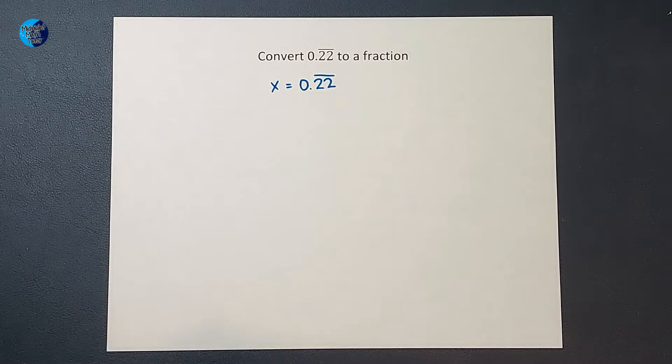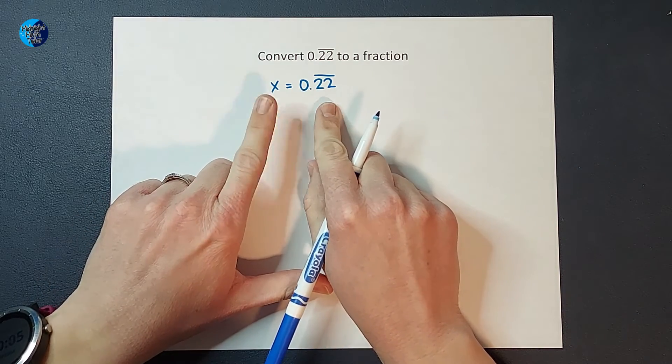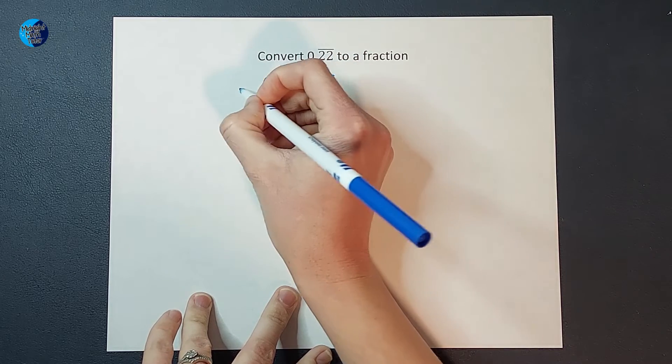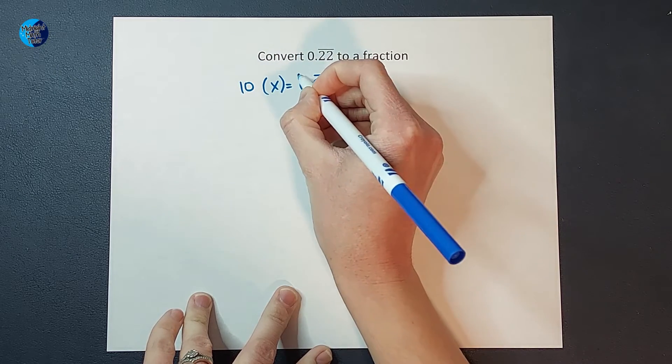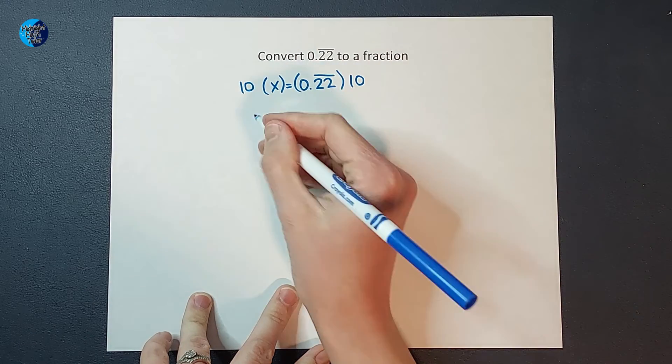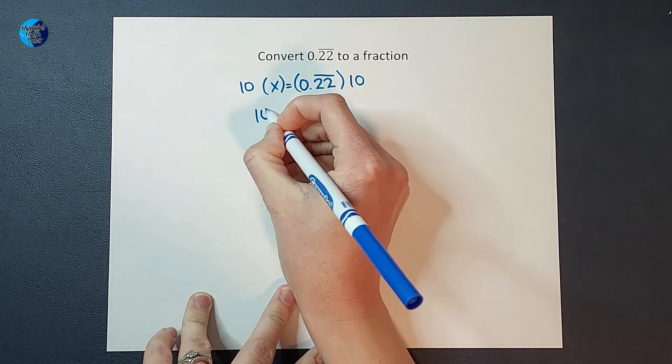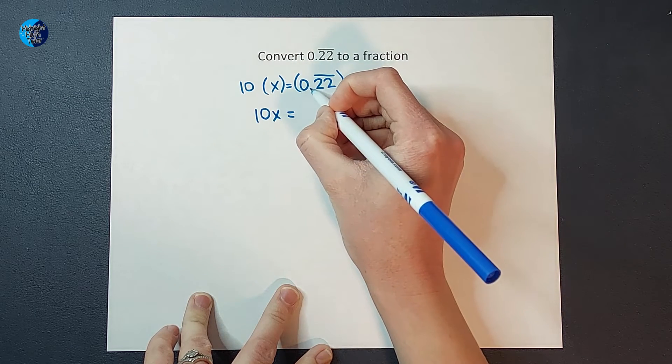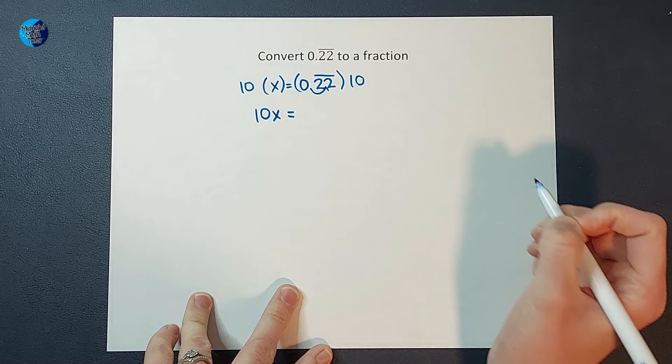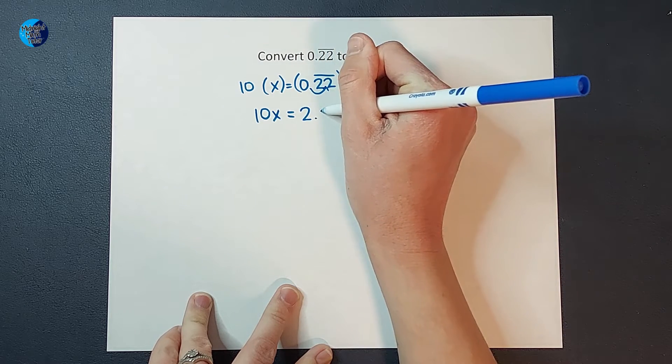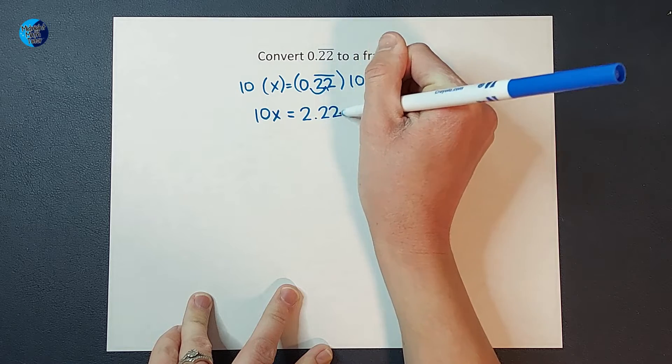From here what I'm going to do, I am going to multiply both sides of this equation by 10. So I'm going to multiply this side by 10 and this side by 10 and let's see what happens. So on this side, I end up with 10x equals. When I multiply by 10, that's just going to move my decimal over one place. So I will end up with 2.22 repeating.